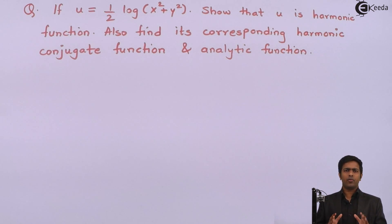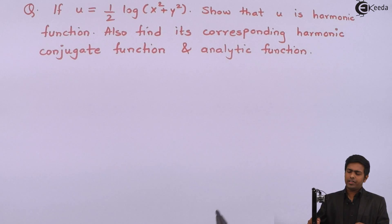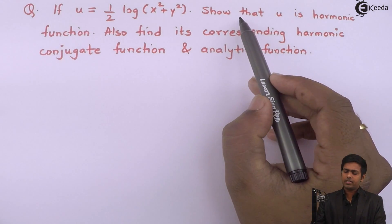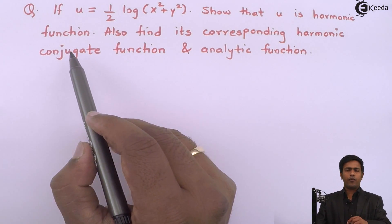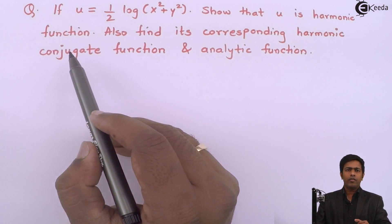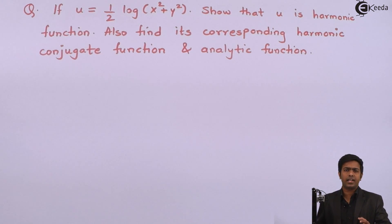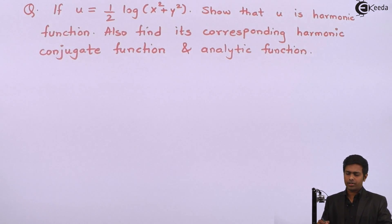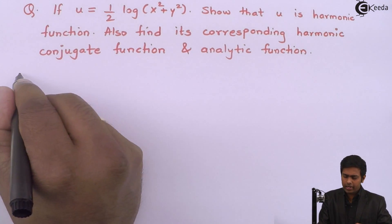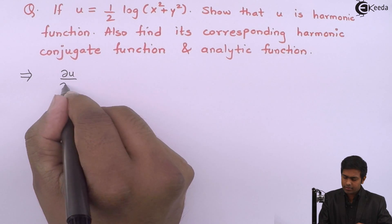Let's start with the first part: show that u is a harmonic function. For that, we will prove the Laplace equation for u. If the Laplace equation is satisfied by u, then we say u is harmonic. So we will find out the value of ∂u/∂x.